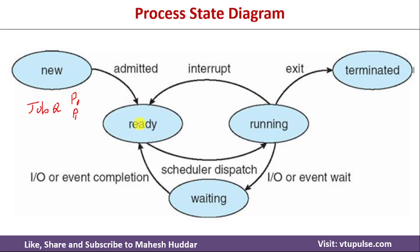Whenever there is space in primary memory, the processes will be brought into the ready state — that is, the program will be stored in primary memory. Primary memory maintains a queue called the ready queue. So whenever we bring processes from secondary storage to primary storage, they are placed in the ready queue. With P0 and P1 both in the ready queue, and more than one process waiting for CPU, we need to use a scheduling algorithm.